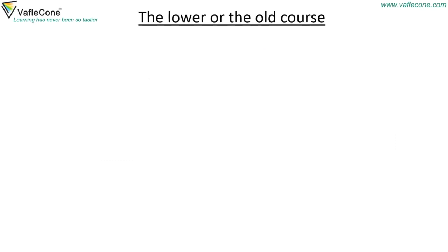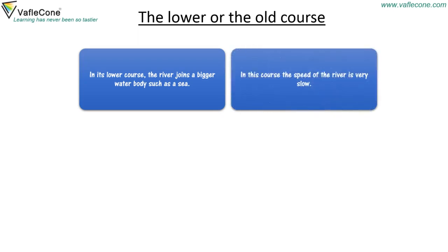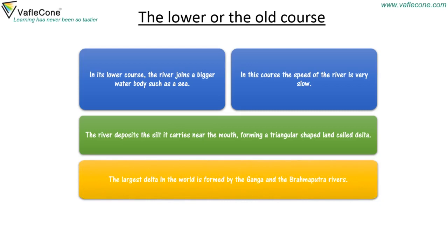The lower or old course: In its lower course, the river joins a bigger water body such as a sea. In this course, the speed of the river is very slow. The river deposits the silt it carries near the mouth, forming a triangular-shaped land called a delta. The largest delta in the world is formed by the Ganga and the Brahmaputra rivers.